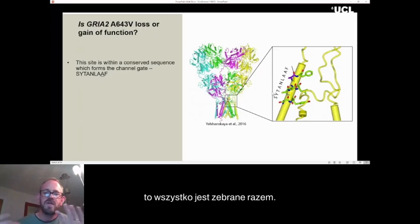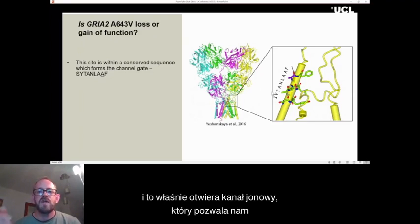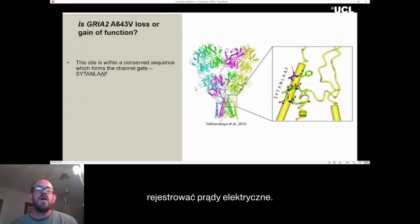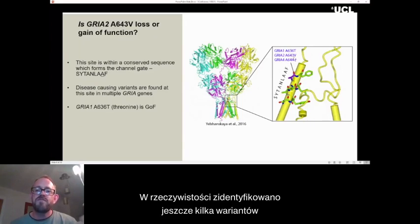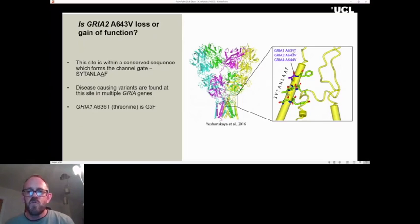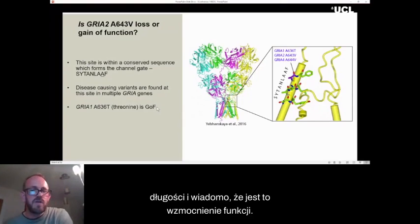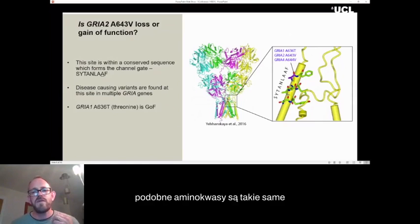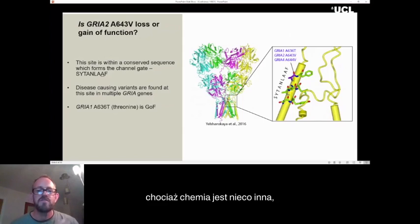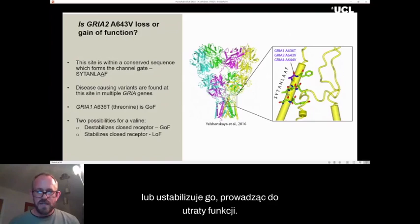Another reason we were convinced that it was likely to be disease causing was that for the AMPA receptors, there's actually been another few variants been identified at this exact site. So for GRIA1, a threonine was found at this site, and for GRIA4, also a valine. And so the threonine variant has been looked at at length and is known to be gain of function. And while it's likely that the valine was also gain of function because they're similar amino acids, they're the same size and shape, even though their chemistry is subtly different. But there were two main options: either this valine could destabilize the closed receptor causing gain of function, or it could stabilize it, leading to loss of function.